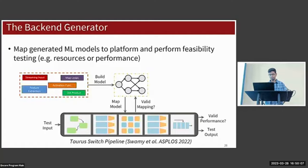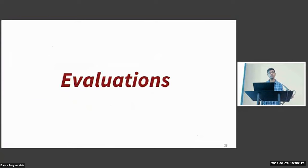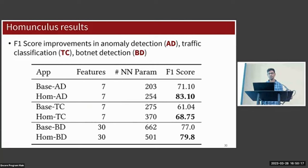Lastly we'll take a look at some evaluations on real-world applications built with Homunculus. We test Homunculus across three different applications: anomaly detection, traffic classification, and botnet detection. Here the models and datasets are all taken from literature. In each case, the Homunculus-generated application actually outperforms the F1 score of the baseline hand-tuned counterpart.